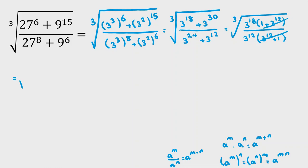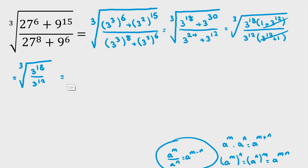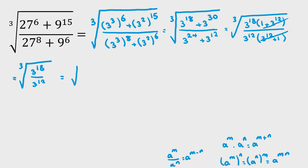It will be 3 to the 18. Cube root of 3 to the 18, over 3 to the 12. So use the quotient rule — the bases are equal, you get 3 to the 18 minus 12, which is 6. So it will be cube root of 3 to the 6. Cube root of 3 to the 6 is 3 to the 6 over 3, which is 3 squared, which is 9. So our answer here is 9.